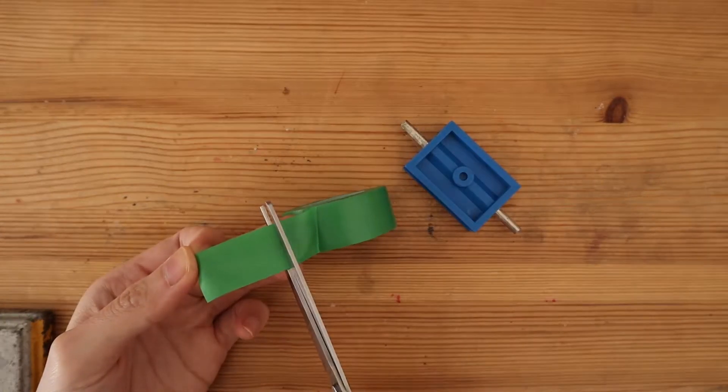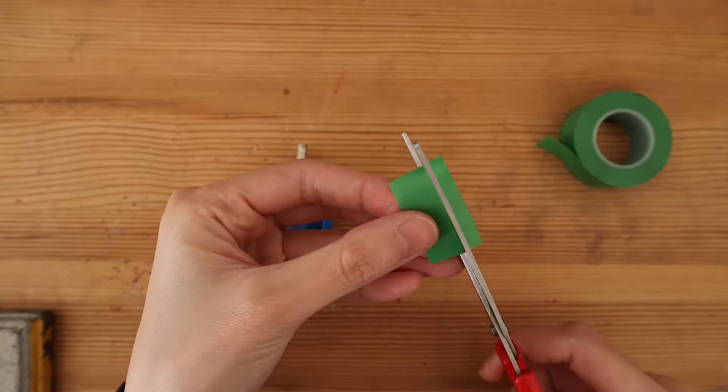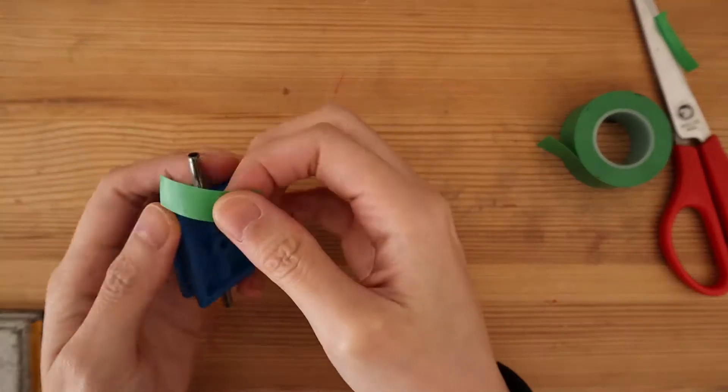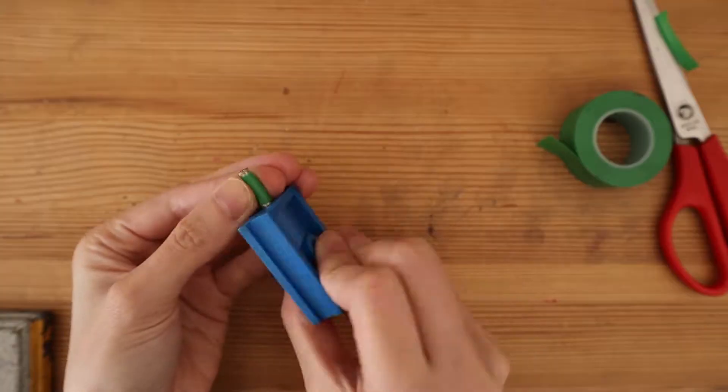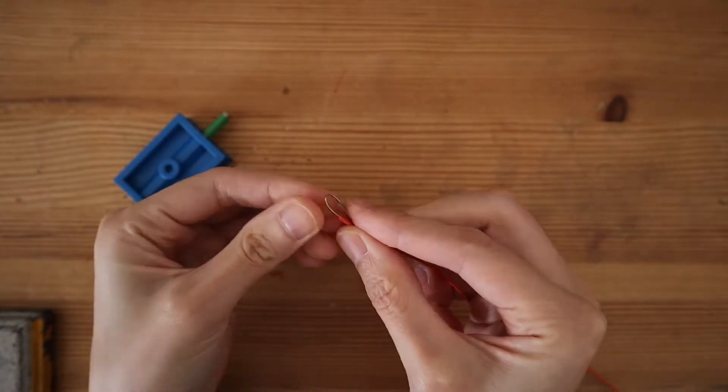Take your rotor and wrap one end with a small piece of electrical tape. With the stripped end of the wire, make a small loop.